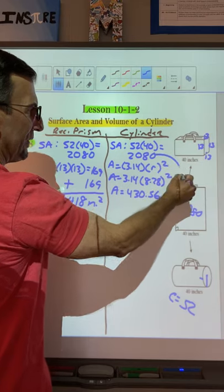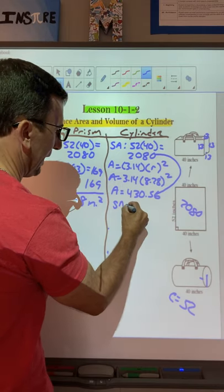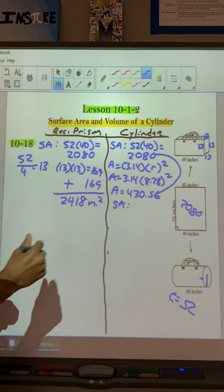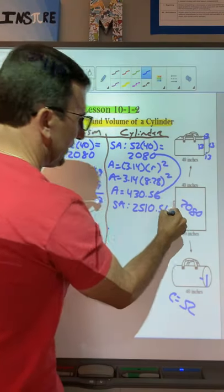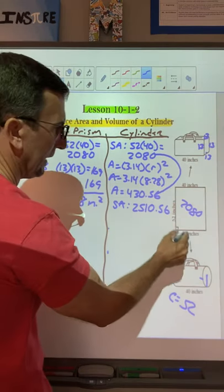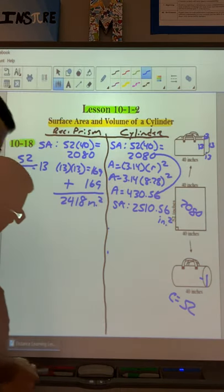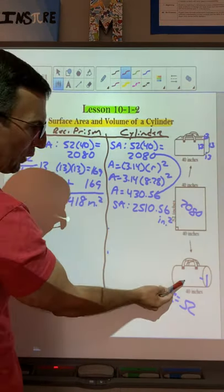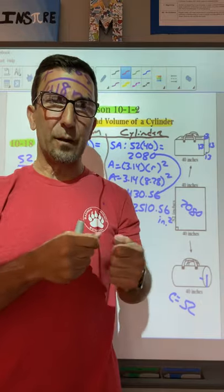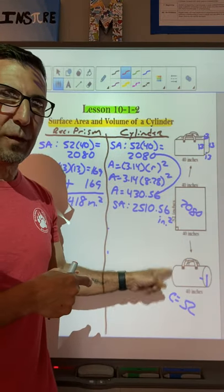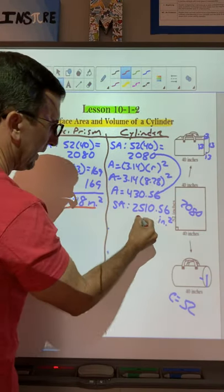Now we're going to take this, and we're going to take this, and we're going to add them together. So my surface area for both of these is going to be, what is that, 2510.56. I'm trying to do it fast in my head. And it is inches squared. So if you notice, there's a little more surface area to the cylinder than this one. Which means when we're building this, the materials, it's going to be a little higher cost for this one than for this one up here. Because we have this, and we have that.